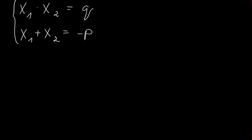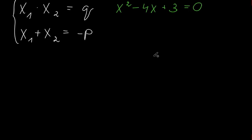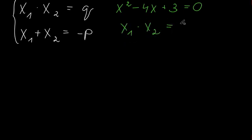Let me show you an example. Let's say we have x² minus 4x plus 3 equals zero. So what two numbers could we multiply to get 3? We could multiply 3 and 1. So x₁ times x₂ equals 3 times 1, which equals 3.